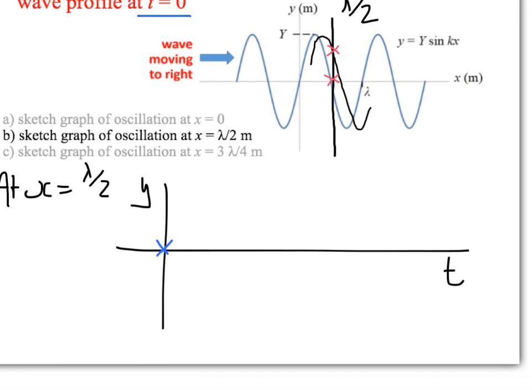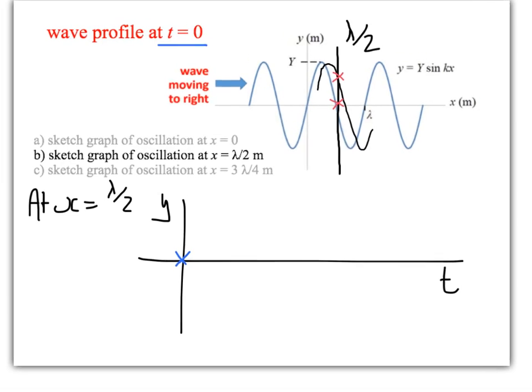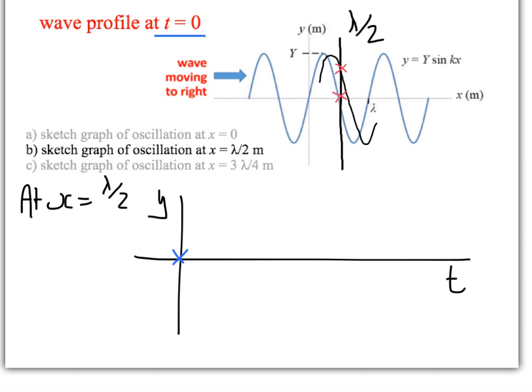So, when it comes to drawing the graph of the oscillation, we know that it's going to go in the positive direction, and it's going to look something like that.